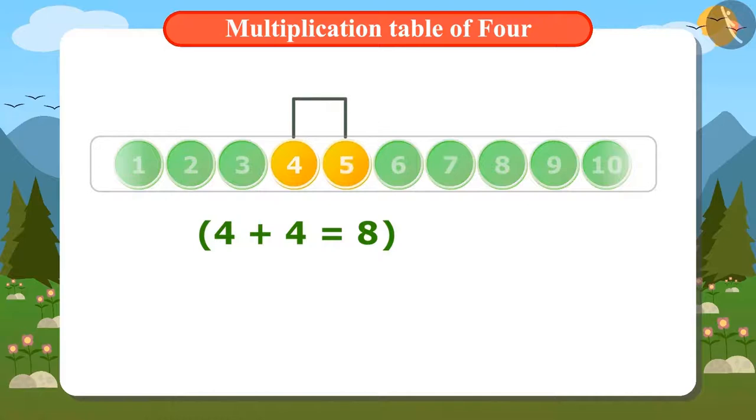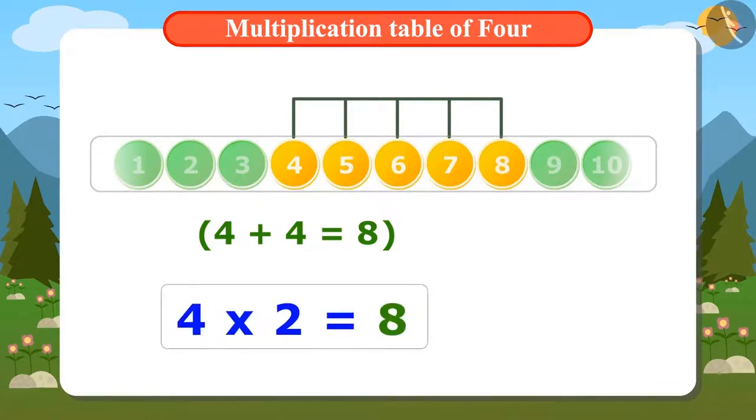Now we will find the 4th number after 4. That is 1st, 2nd, 3rd and 4th number is 8. The answer is the same in both ways. That is 8. That means 4 twos are 8.